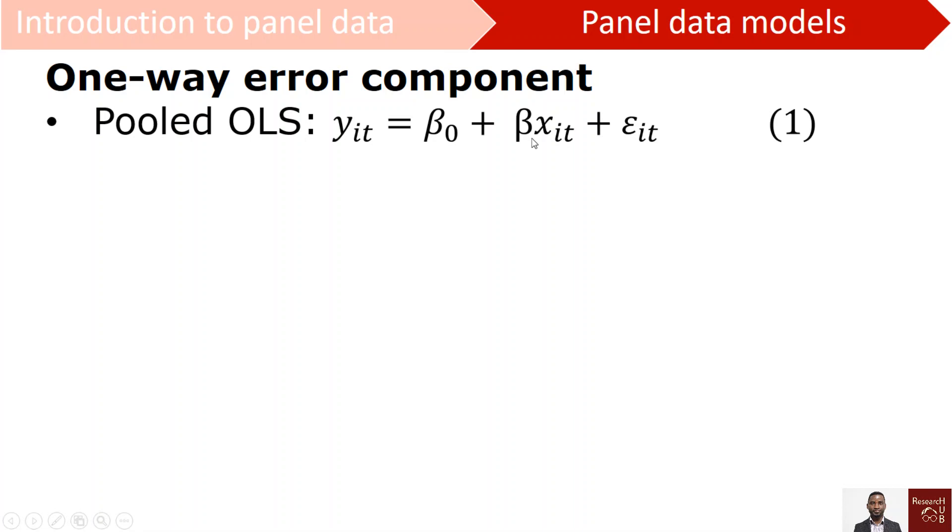Then beta null is the constant term, and we have beta which represents all the coefficients to be estimated. Next, if we take a variable called age of a company, so that is x_it for one company at a particular point in time.